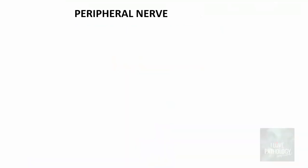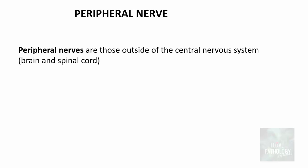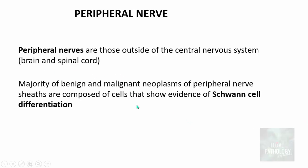Now what's a peripheral nerve? Peripheral nerves are basically those which are outside of the central nervous system, outside of brain and spinal cord. Majority of the benign and malignant neoplasms of peripheral nerve sheaths are composed of cells that show evidence of schwann cell differentiation.